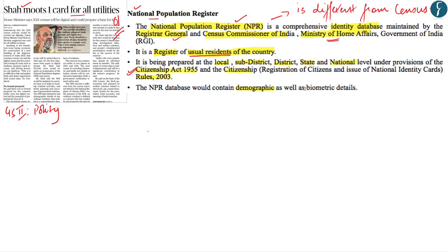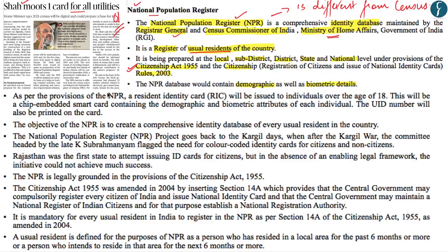This NPR database will contain both the demographic as well as the biometric details of the usual residents of this country. As per the provisions of an NPR, a usual resident will be issued a Resident Identity Card or RIC, which will be issued to everybody above the age of 18. This RIC will be a chip-embedded smart card containing the demographic and biometric attributes of each individual. Moreover, the unique identification number will also be printed on this card. However, please note that the NPR is different from the NRC or National Register of Citizens. The objective of the NPR is to create a comprehensive identity database for every usual resident in the country.